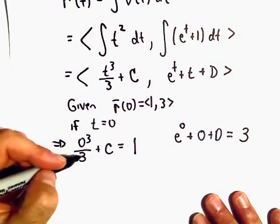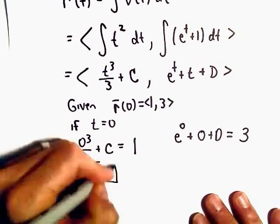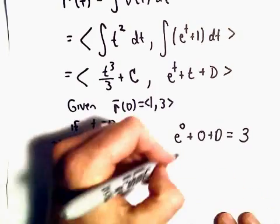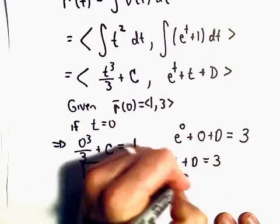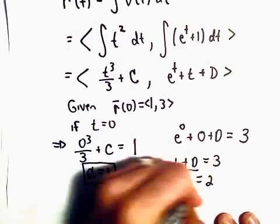Well, 0³/3 is just 0, so we'll get c equals 1. e⁰, well, that's 1 + d equals 3. If we subtract, we'll get d equals 2.